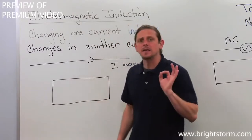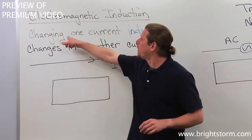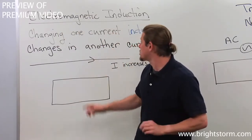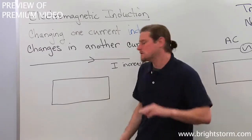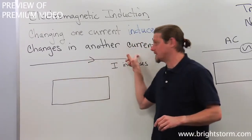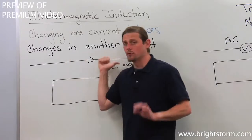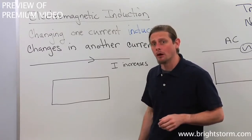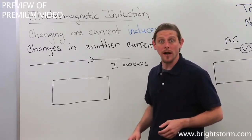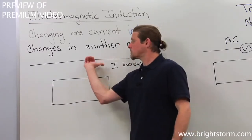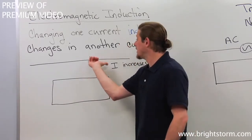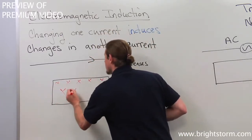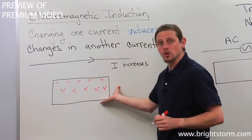Electromagnetic induction is associated with the property that if you change one current, you can induce changes in another current. We've got a current in a long wire going to the right, and it's going to increase. This current, since it's going in this direction, is associated with a magnetic field that's going into the page inside this second circuit loop.